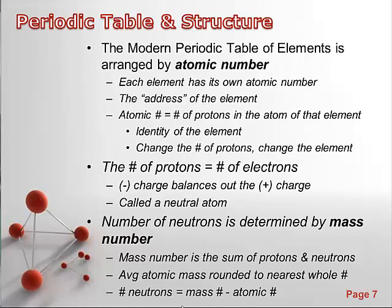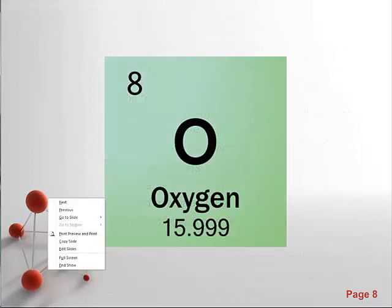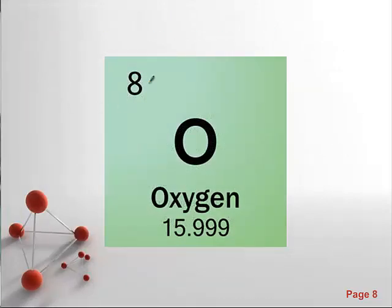If we change the number of protons, we change the element. So going back to our example here, if we look at oxygen, we see that it has an atomic number of 8. So right away, that tells us that oxygen has 8 protons in its structure, in the nucleus of an oxygen atom. So for any element, we know that whatever its atomic number is, whatever its address is, we can consider that being the amount of protons that are in that element.